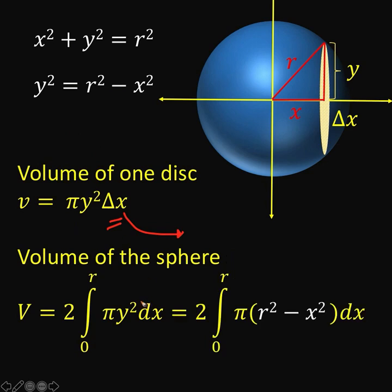And since y squared is equal to r squared minus x squared, then we can now replace this y squared with r squared minus x squared. All the rest are just copied. We copy the 2. We copy the integral from 0 to r. We copy the pi. We copy dx. And change y squared with r squared minus x squared.